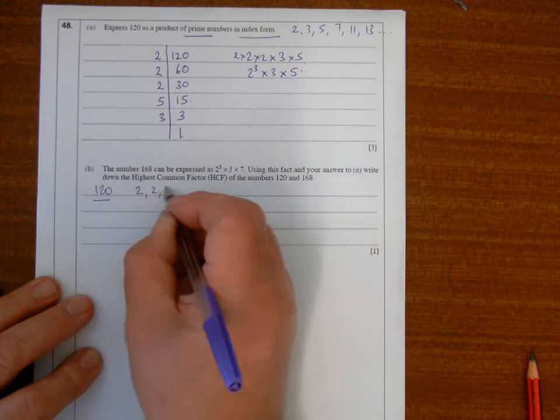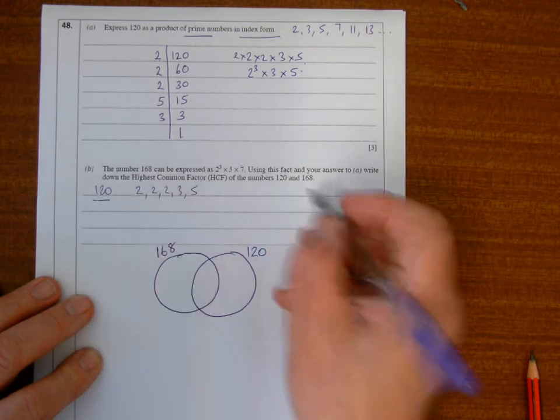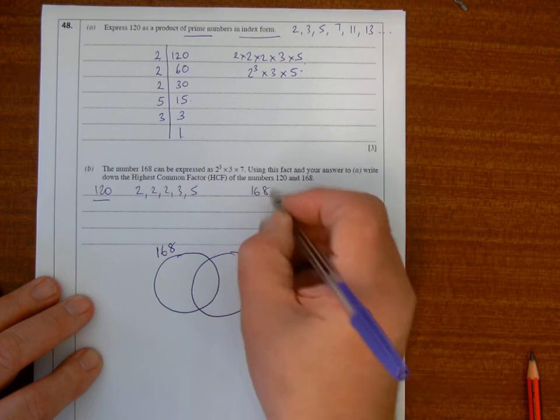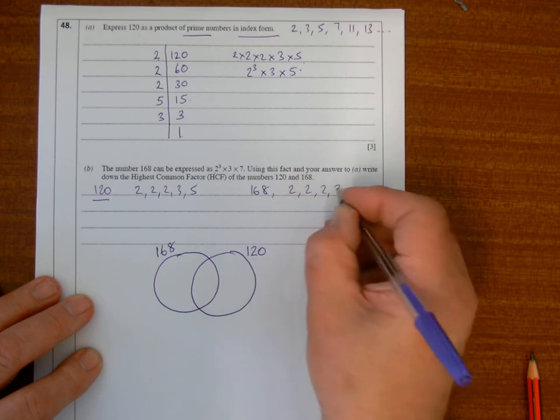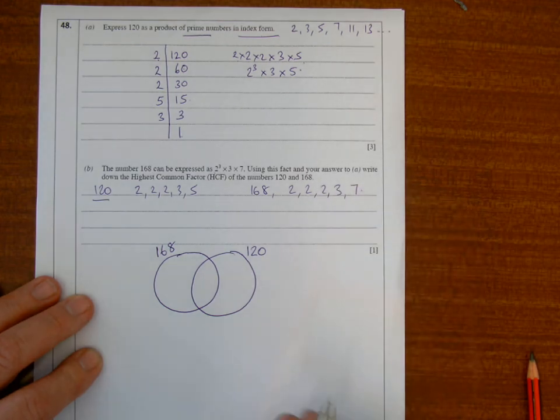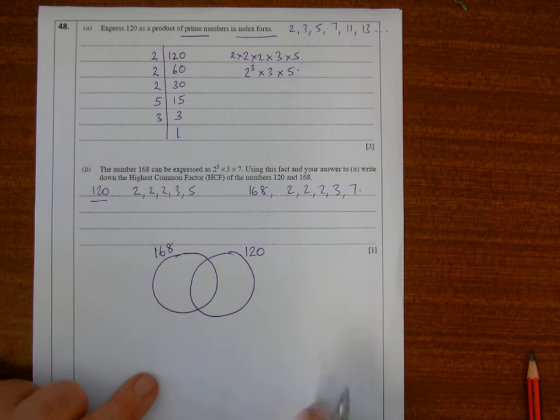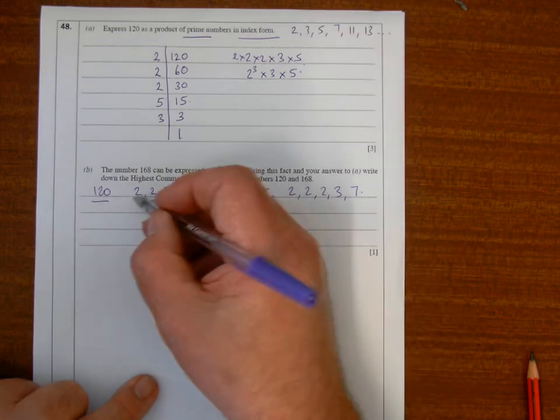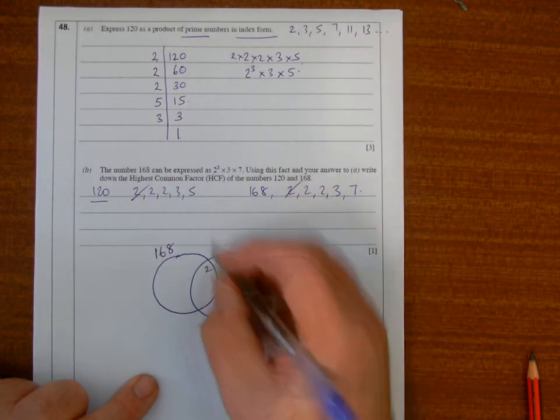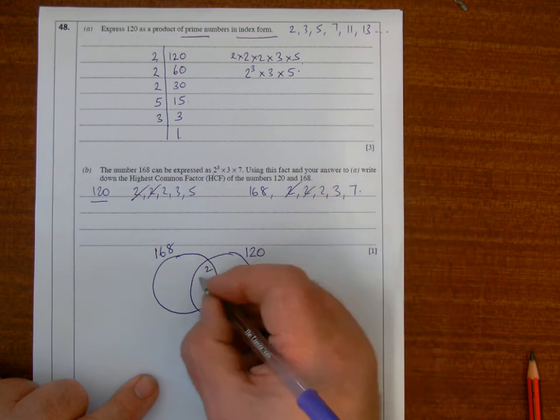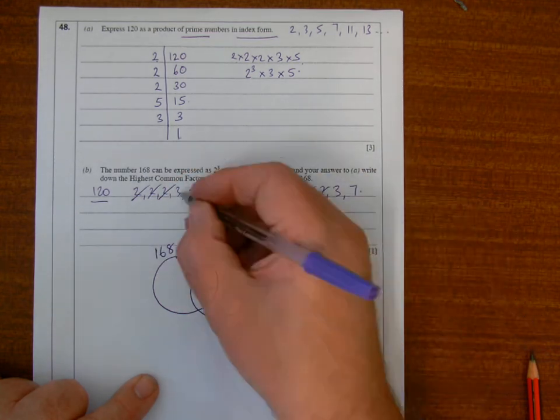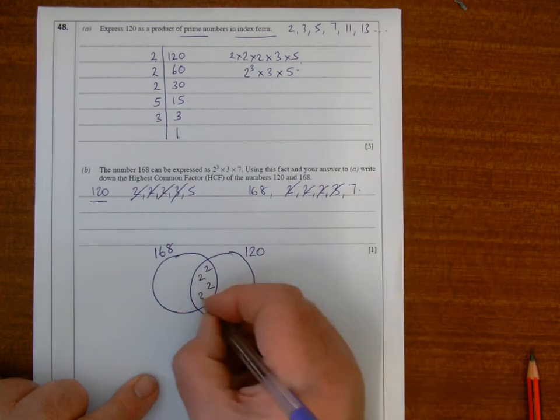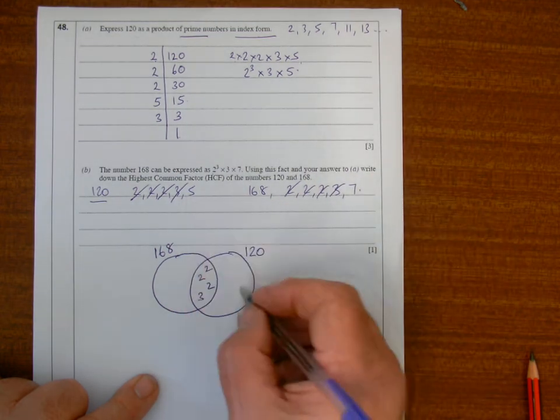For 120 I've got 2, 2, 2, 3, and 5. For 168 I've got 3 twos: 2, 2, 2, 3, and 7. So, 2 is in both, that goes in the middle. 2 goes in both, that goes in the middle. 2 goes in both, that's in the middle. 3 is in both, that's in the middle. 5 is on its own there, 7 is on its own there.